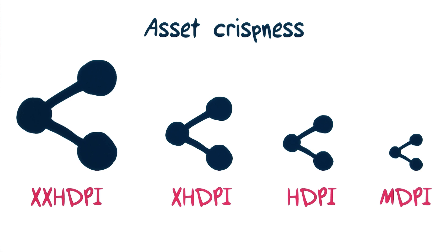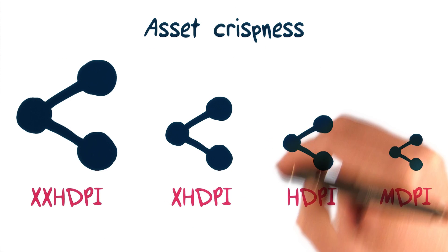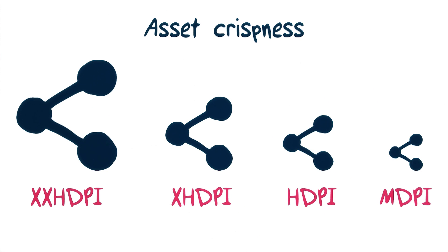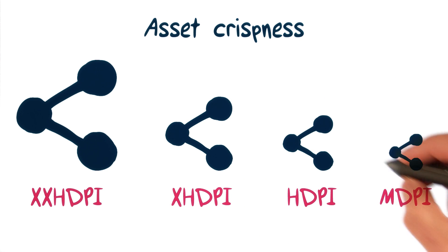However, downsampling has risks. There's a minor performance hit when Android has to do scaling for you on the fly. Additionally, Android's downsampling algorithm is really optimized for speed, not perfect scaling. It doesn't look great at all if you have to downsample from a very large 1600 by 1600 pixel graphic to a small 200 by 200 pixel space.